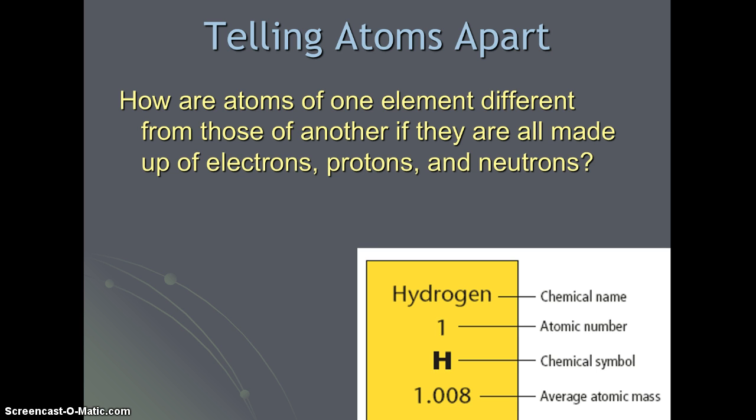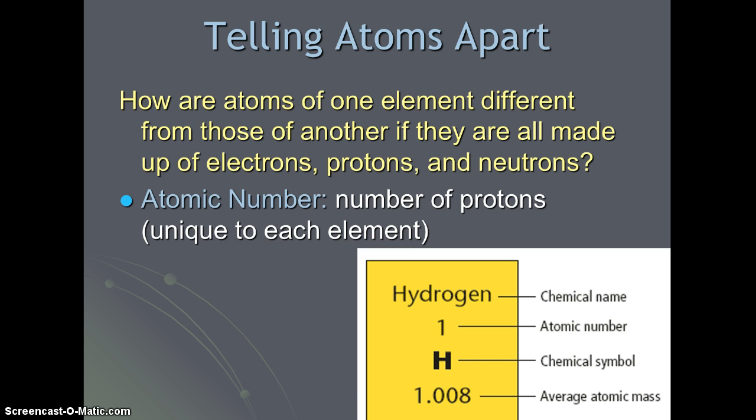Not long after the Rutherford Gold Foil Experiment, Henry Mosley, an English scientist, discovered that atoms of each element contain a unique positive charge in the nucleus. He identified this as the atomic number, which is the number of protons and is unique to each element on the periodic table.